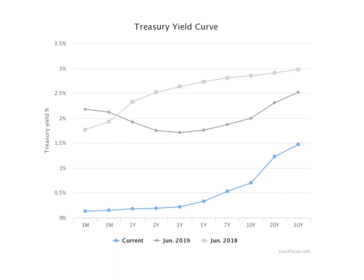We just saw that the Treasury yield curve for the U.S. as of June 2020 — this is the current one, the blue one — it's upward sloping, meaning that long-term interest rates, or the yield on long-term bonds, is higher than the annualized yield for the short term. So this is a normal yield curve.